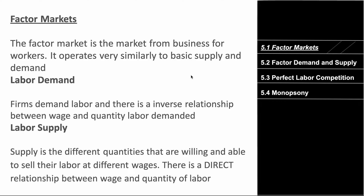We've covered the different types of market structures that exist for firms, but now we have to cover how firms actually employ workers, because workers are incredibly important to how a firm operates. So we have the factor market. The factor market is a market from businesses for workers. It operates very similarly to basic supply and demand from Unit 2, with supply being an upward sloping line and demand being downward sloping, but this time we have labor demand and labor supply.